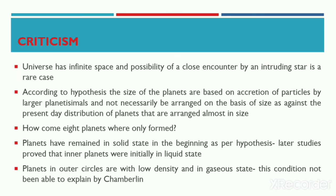According to the hypothesis, the size of the planets depended on the amount of particles attracted and accreted by the nuclei of larger planetesimals and the amount of particles available in the particular orbit. Thus the size of planets is based on accretion of particles by the larger planetesimals, and they should not necessarily be arranged in order of their size. However, the present-day distribution of planets in our solar system is almost arranged on the basis of size.